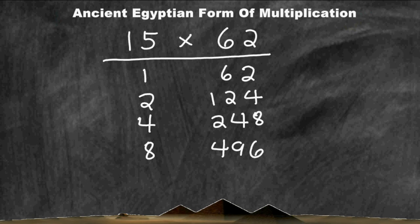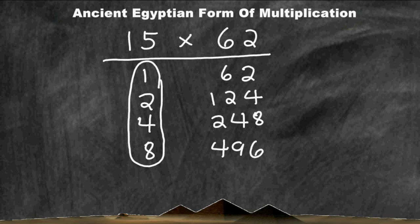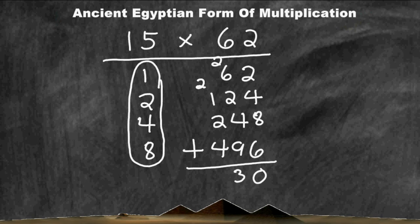Next we go back to the first column and figure out what combination of numbers will add up to the number 15. In this case, all 4 numbers add up to 15. Therefore, we must add up all of the numbers directly to the right of all 4 of those numbers. Adding those values together gives us a total of 930. So the product of 15 and 62 is 930.